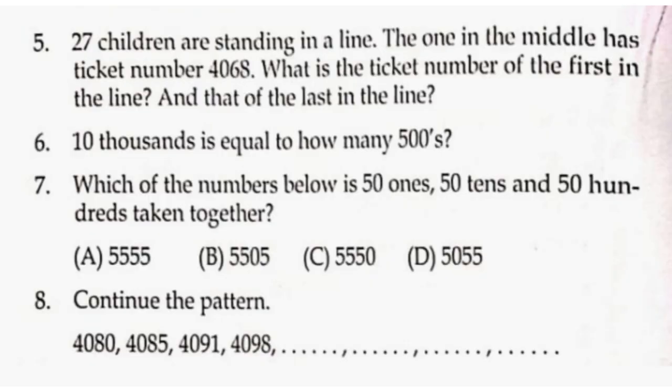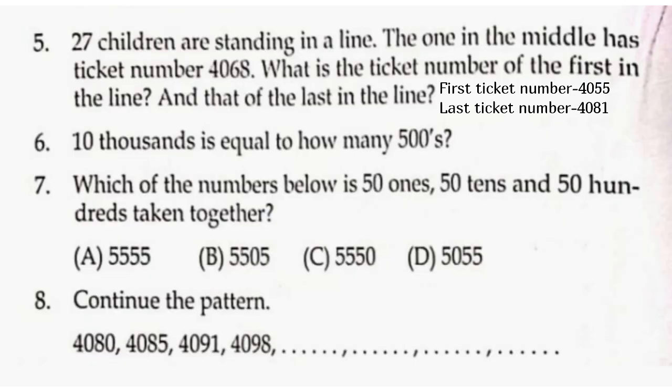27 children are standing in a line. The one in the middle has ticket number 4,068. What is the ticket number of the first and last in the line? The middle child's position is 14, so there are 13 children before and after. First ticket: 4,068 minus 13 equals 4,055. Last ticket: 4,068 plus 13 equals 4,081.